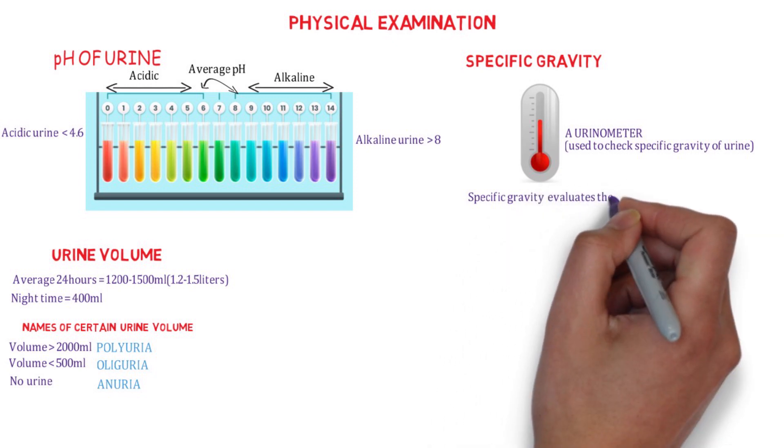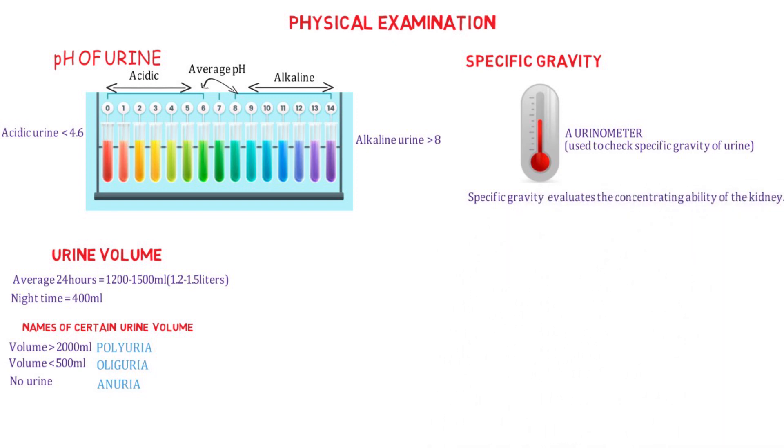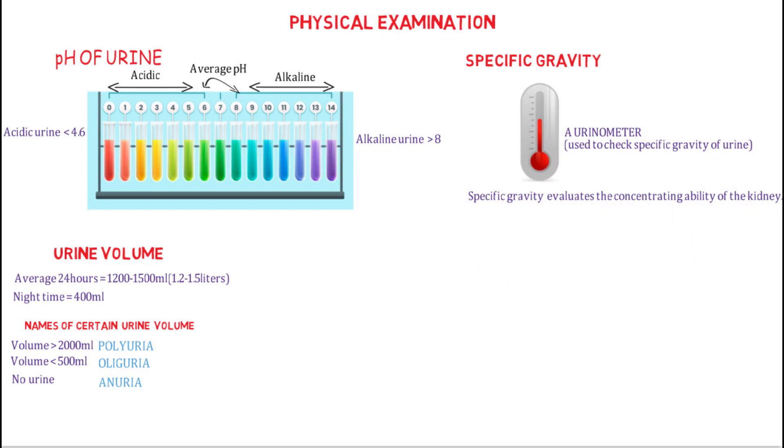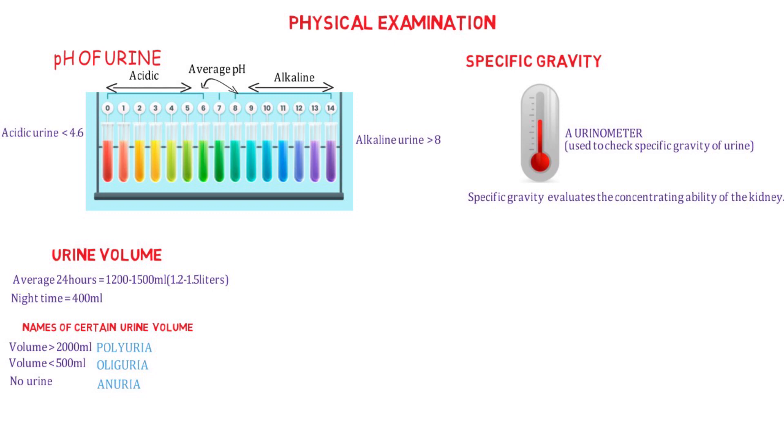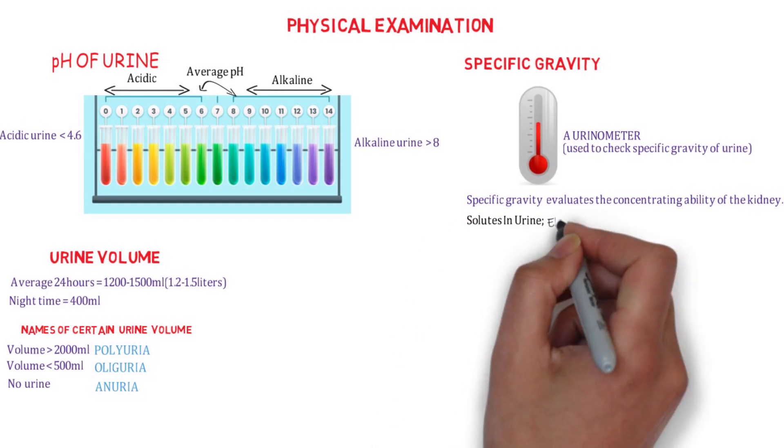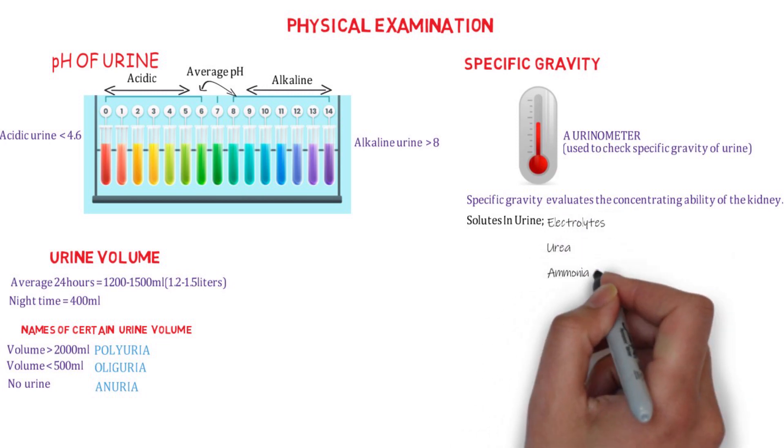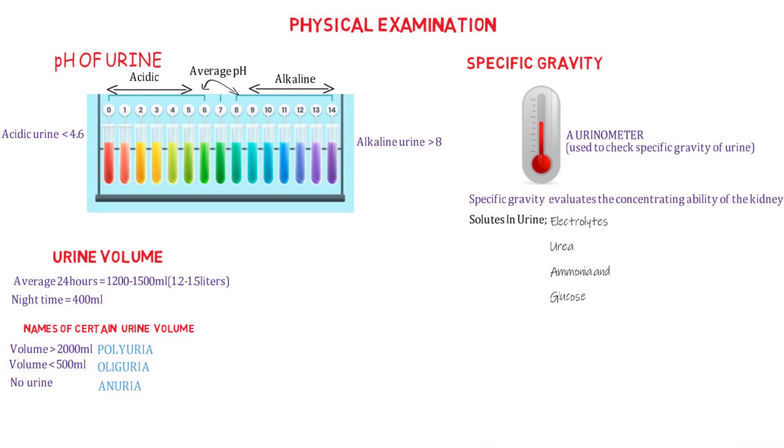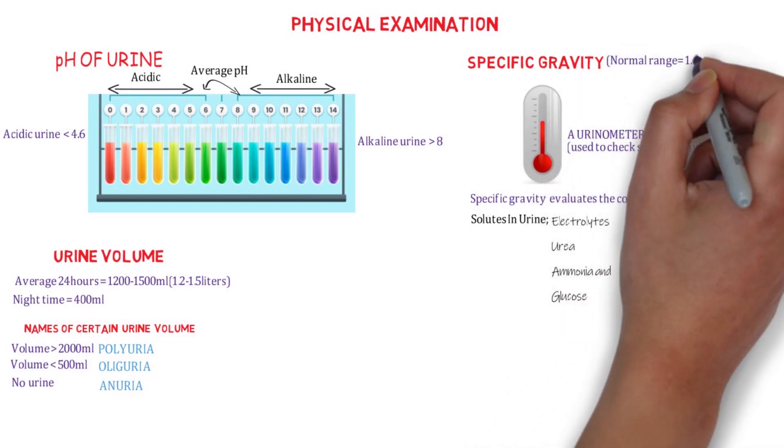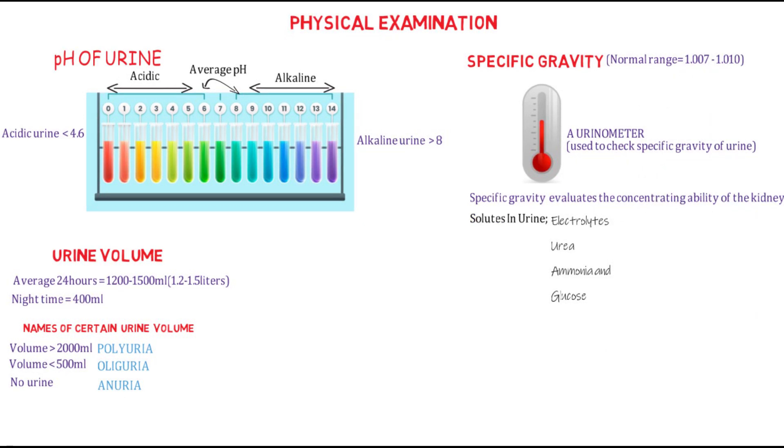What's specific gravity? Specific gravity is a test that evaluates the concentrating ability of the kidneys, and it depends on the concentration of various solutes in the urine. Solutes are electrolytes, urea, ammonia, and glucose, and it ranges from 1.007 to 1.010 in a healthy individual.